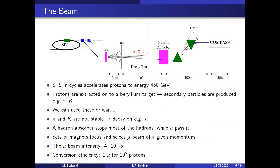Regarding the beam: it is accelerated in the SPS to around 450 GeV as protons, which then hit a beryllium target. Secondary particles are produced, and if we want a muon beam, we select pions which are more stable — they decay into muons. The muon beam intensity is about 4×10^7 per second; for one incoming proton, roughly 10^-5 muons are produced.